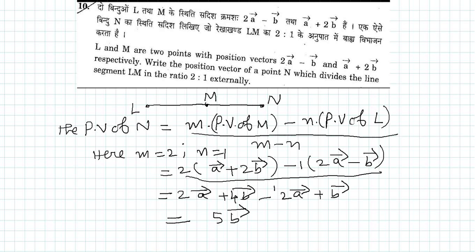Let us look at problem number 10. Here we have to find the position vector of N which divides the line segment LM in the ratio 2 is to 1.